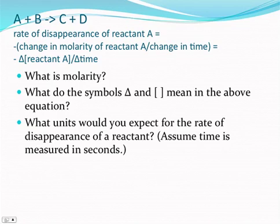In the beginning, they gave us that for a reaction A plus B going to C plus D, the rate of disappearance for reactant A is equal to the negative change in molarity of reactant A over the change in time. They asked: what is molarity? What do the symbols delta and the brackets mean? And what units would we expect for the rate of disappearance of a reactant?